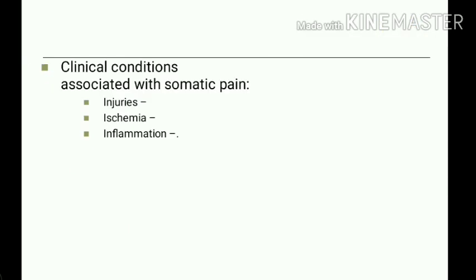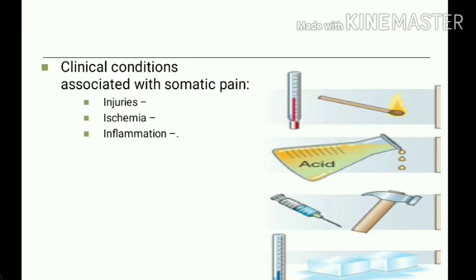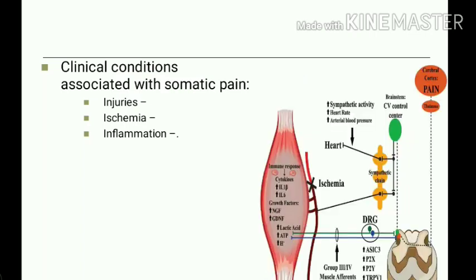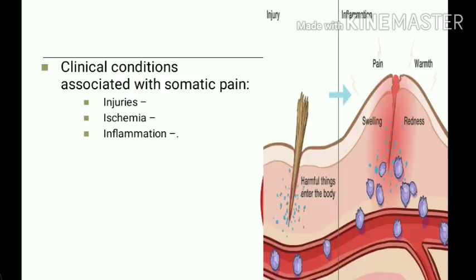The clinical conditions associated with somatic pain include: first, injuries — whether mechanical trauma, chemical injuries, thermal injuries, or bacterial injuries, all stimulate somatic pain. Second is ischemia: when blood flow to the tissue is blocked, there is accumulation of lactic acid due to anaerobic metabolism, and it produces pain.